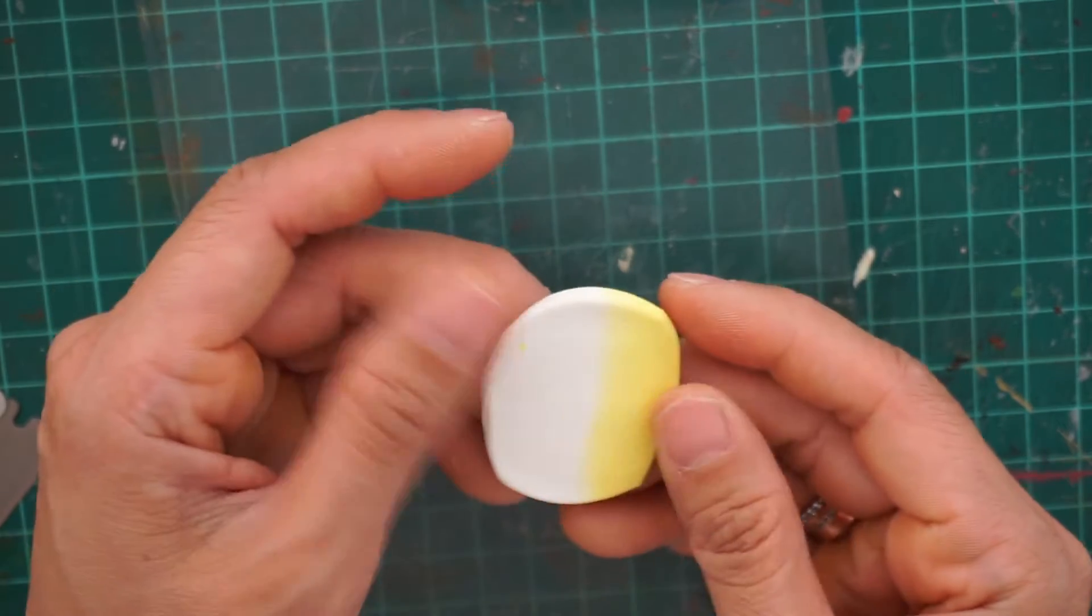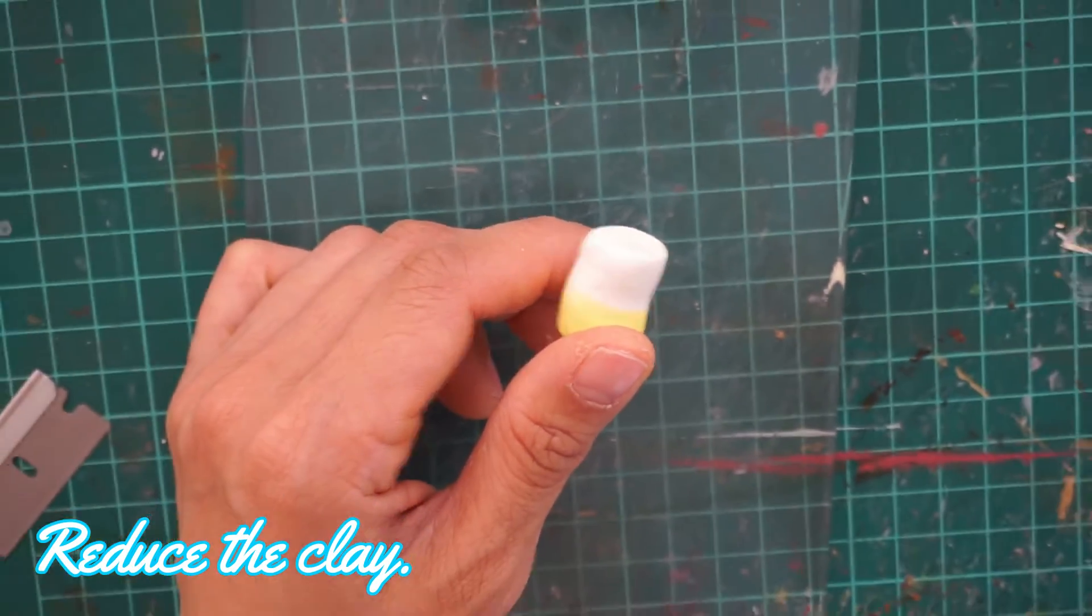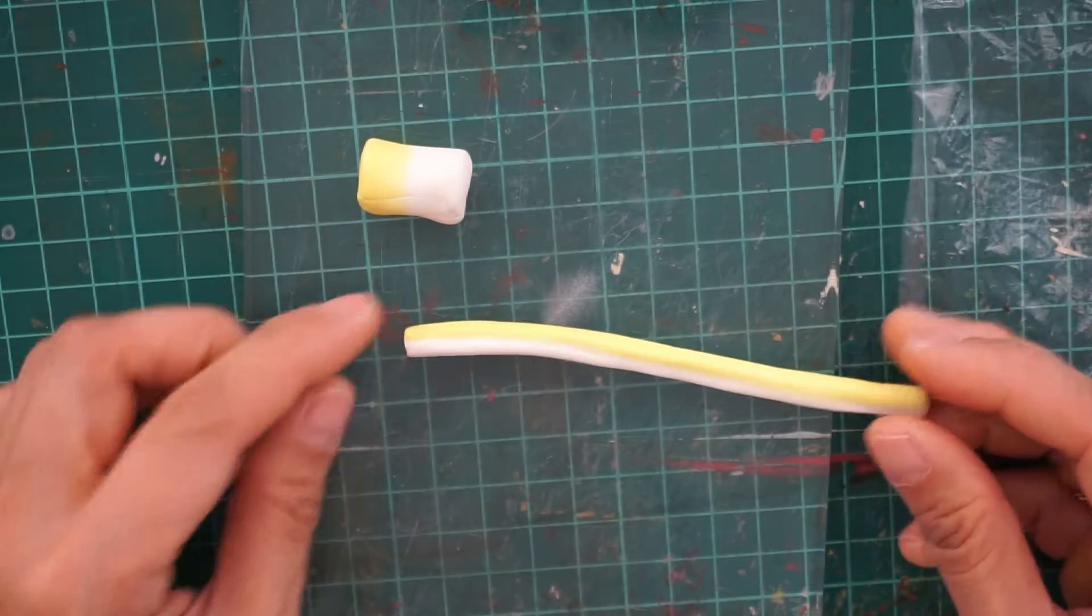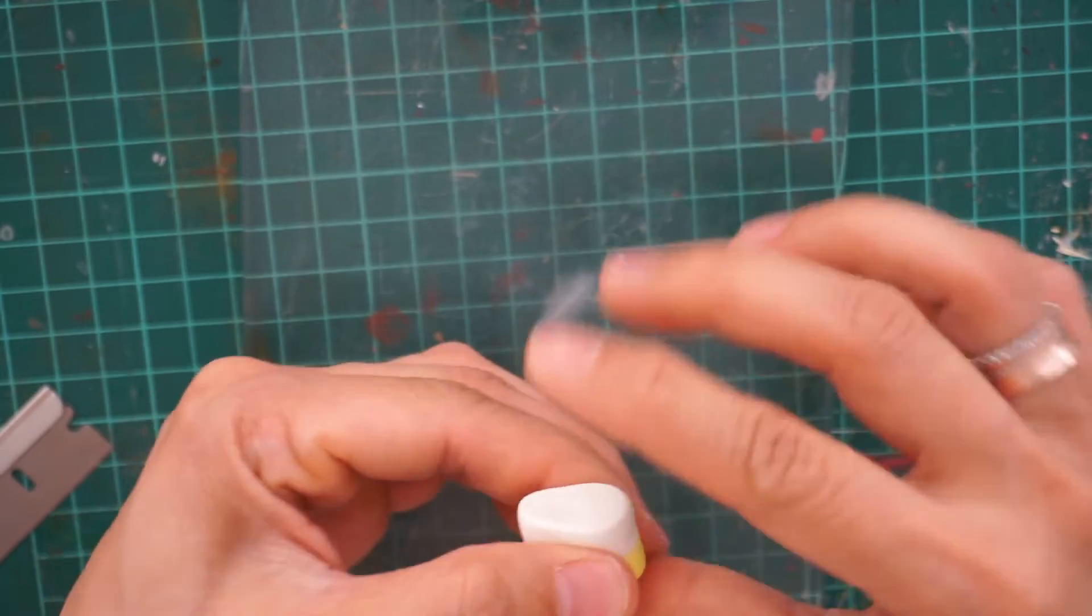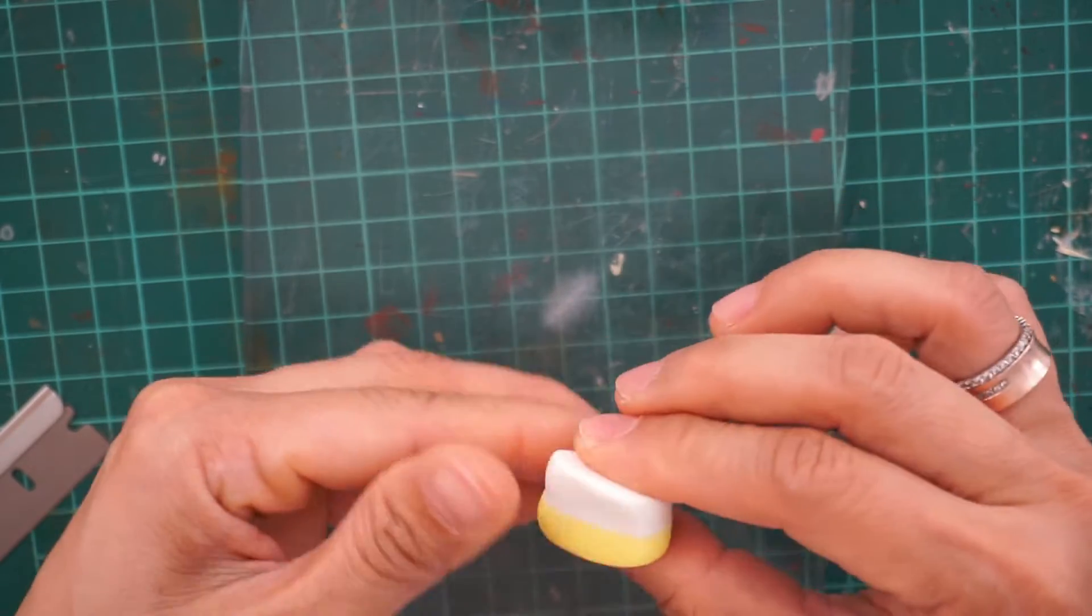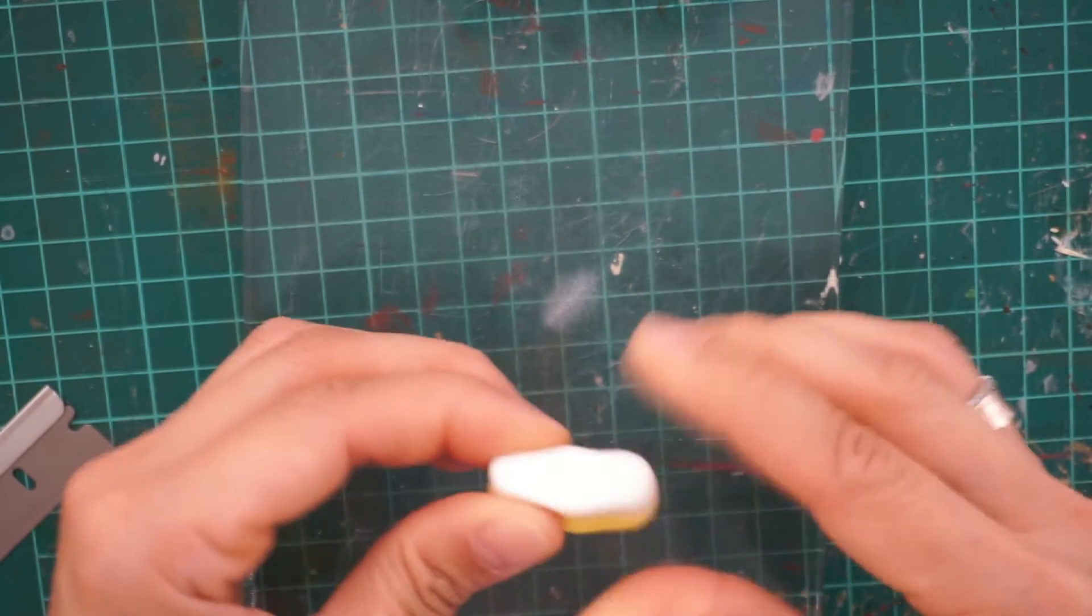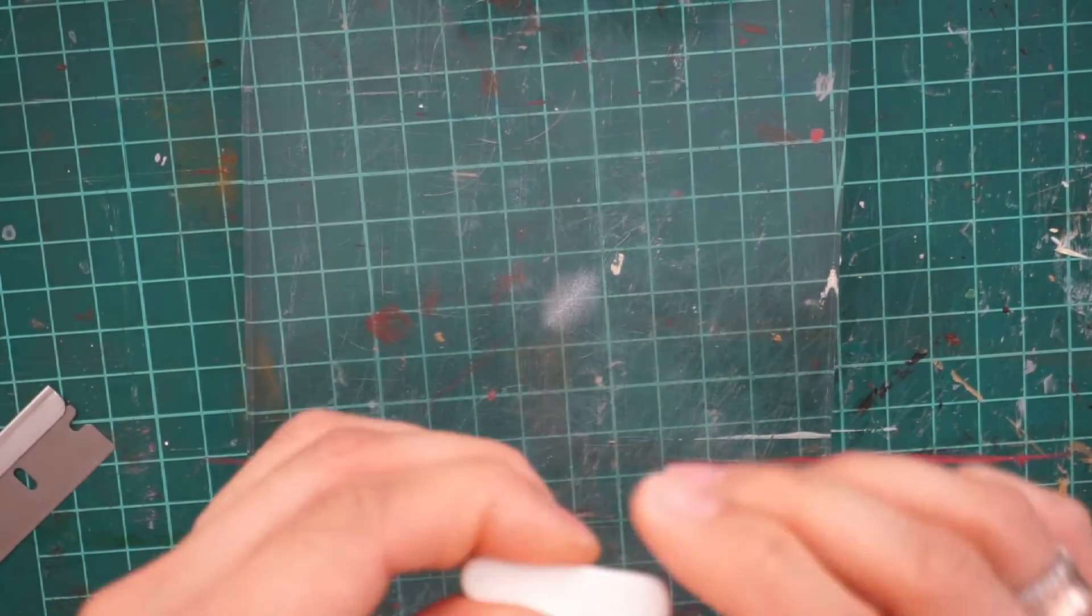Next, we are going to reduce the size to something like this. To do this, just press the ends of the clay with your thumb and index finger. You can also pull sideways a little bit, not too strong, just a little bit.